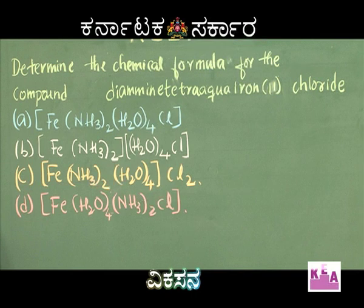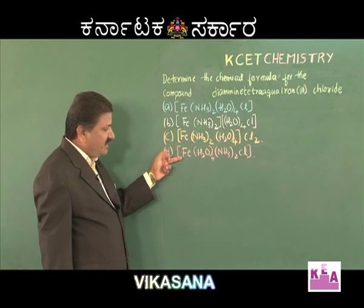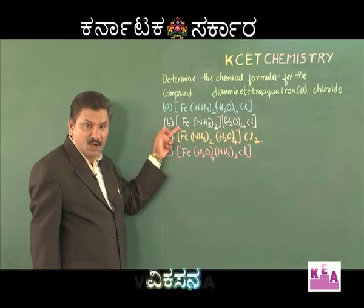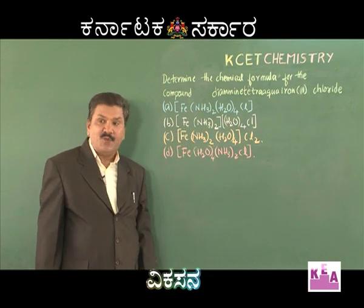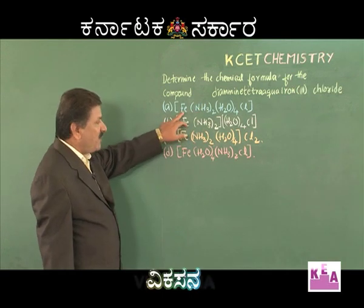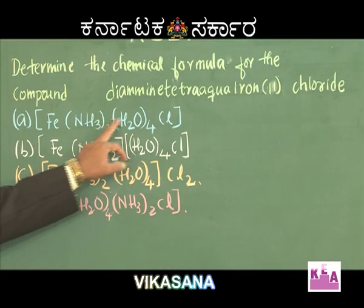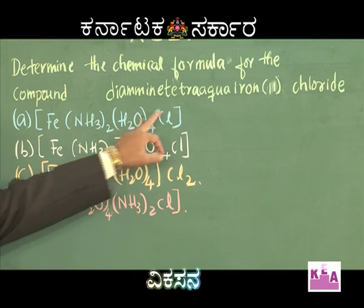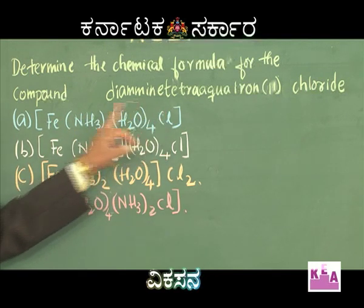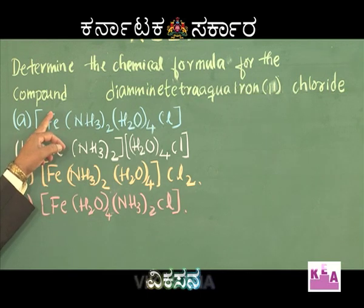Look at the oxidation state of iron given in the name. If you determine the correct oxidation state of iron in each of the given complexes, you will automatically get the correct option. In the first option, both amine and aqua are neutral ligands with no charge, and chloride is −1, which means iron would be +1. This option is ruled out.